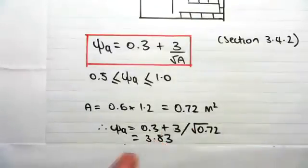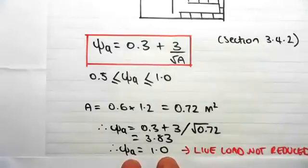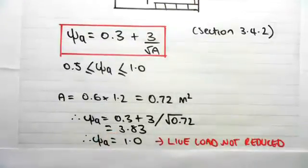Now, 3.83 is greater than 1, so that means that psi A equals 1, which means that the live load cannot be reduced in this case.